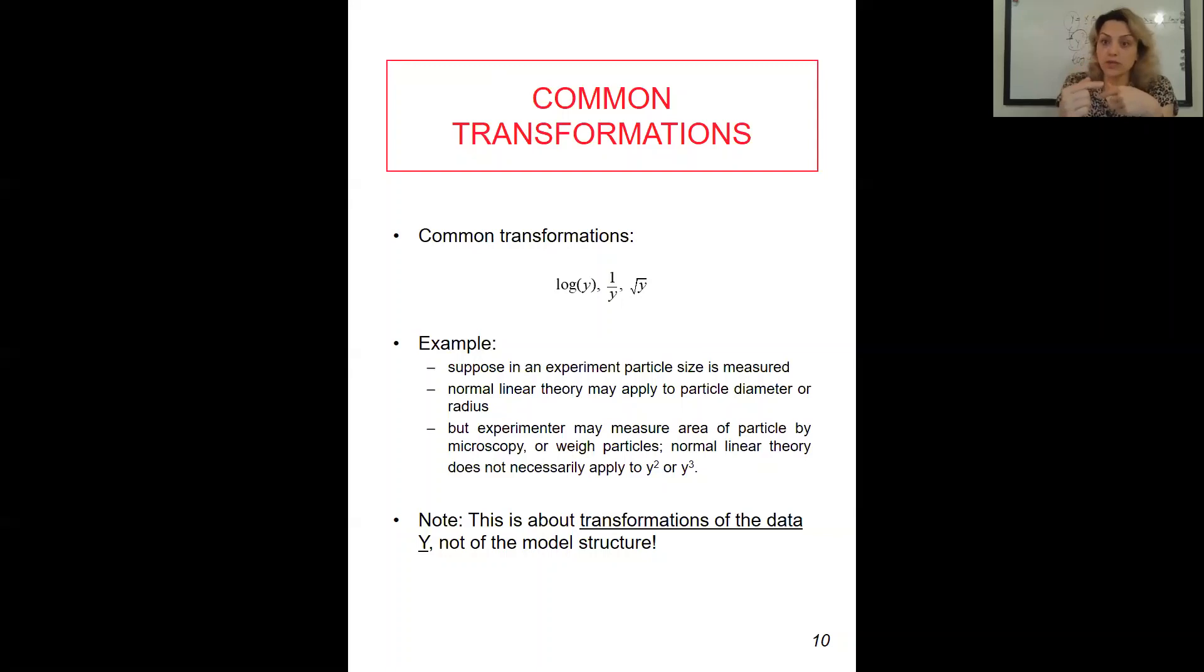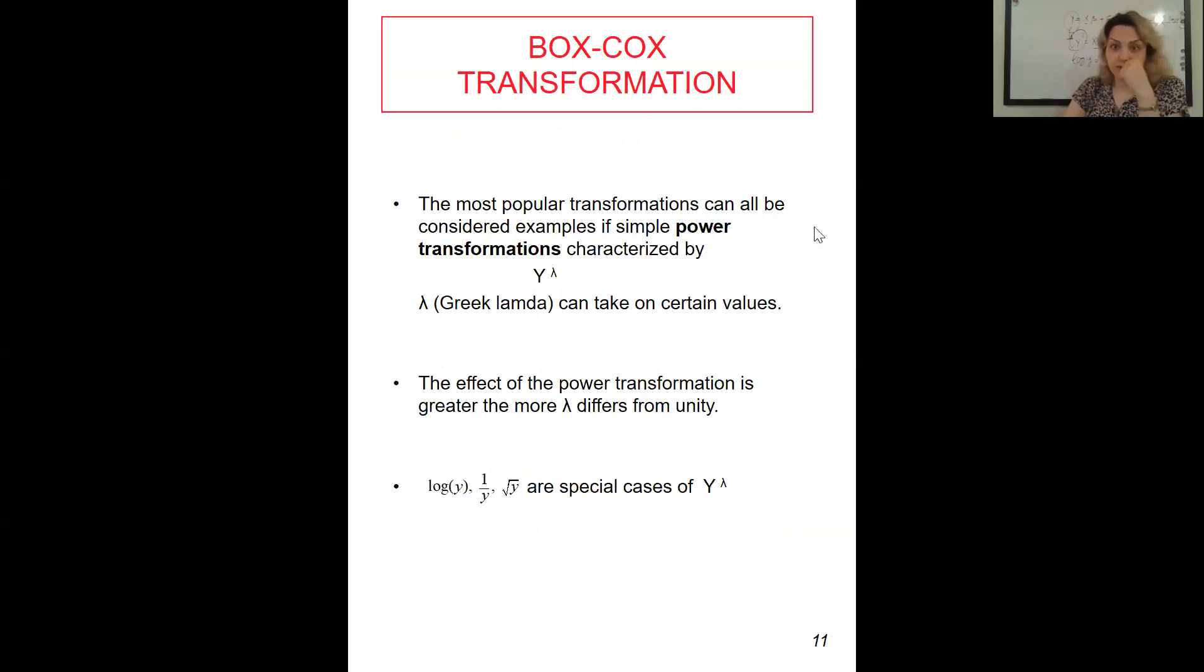Here is a note that this is about transformations of the data, like y, not of the model structure. So the model structure is exactly the same that we had before. For example, before we said that matrix y is equal to matrix x times beta plus epsilon. The structure of the model is exactly the same. The only thing is that y, which is observation, which is a response, we just change the y in our transformations as a result of the transformation.